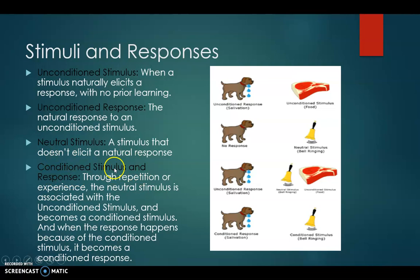The conditioned stimulus and response. Through repetition or experience, the neutral stimulus is associated with the unconditioned stimulus and becomes a conditioned stimulus. And when the response happens because of the conditioned stimulus, it becomes a conditioned response. Now that is pretty confusing, so we'll go over it on this chart and try to clear it up.